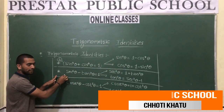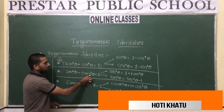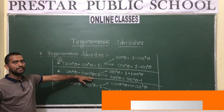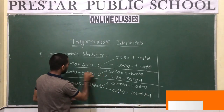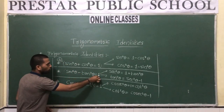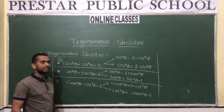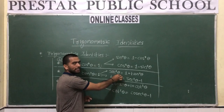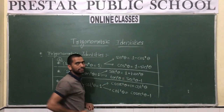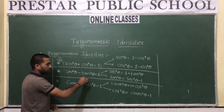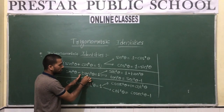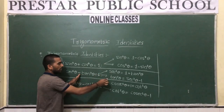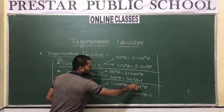The second identity is sec²θ - tan²θ = 1. Here also we can get two more formulas. sec²θ = 1 + tan²θ — because if minus tan²θ goes to the other side it becomes plus tan²θ. And in the same way, tan²θ = sec²θ - 1.